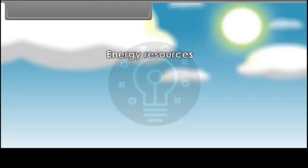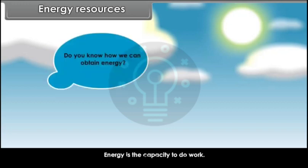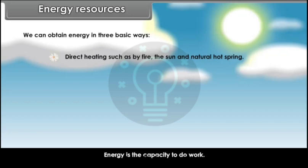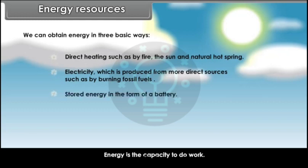Energy is the capacity to do work. We can obtain energy in three basic ways: one, direct heating such as by fire, the sun and natural hot springs; two, electricity which is produced from more direct sources such as by burning fossil fuels; and three, stored energy in the form of a battery.